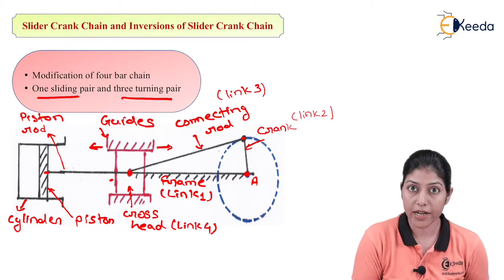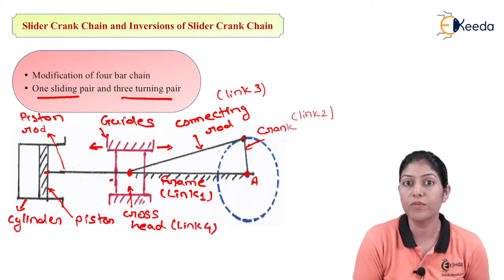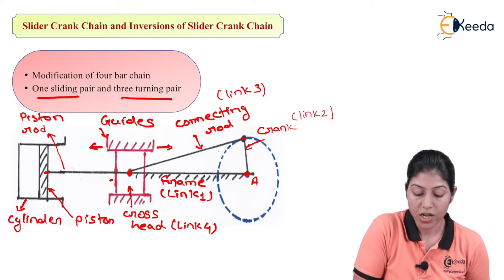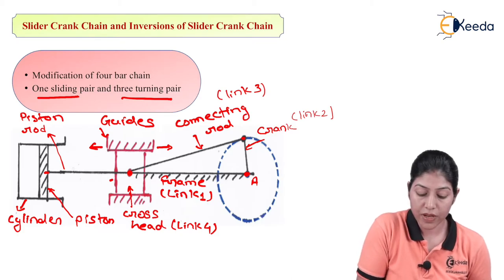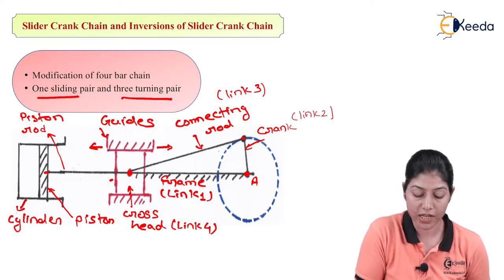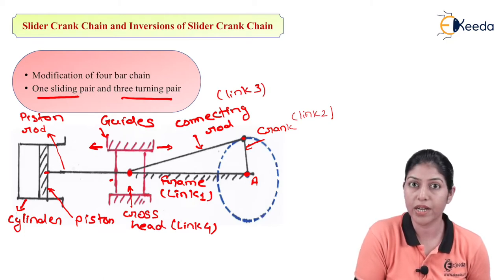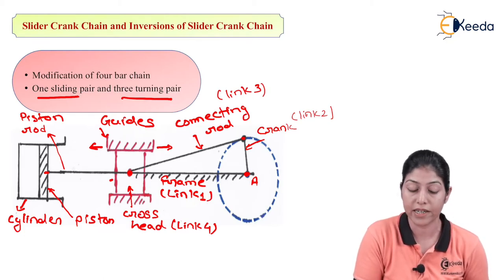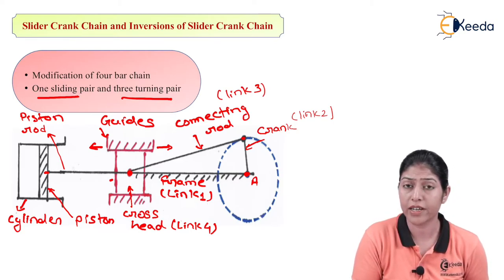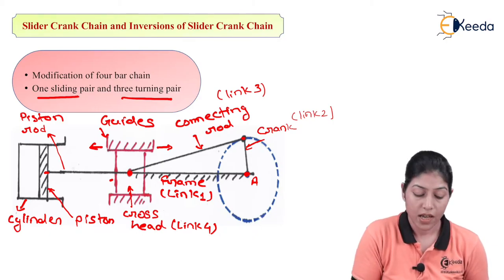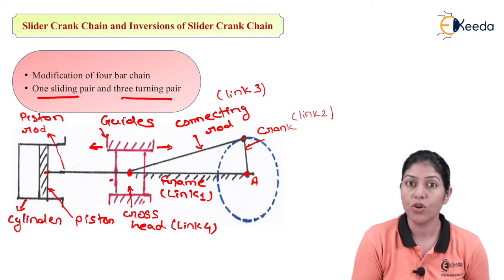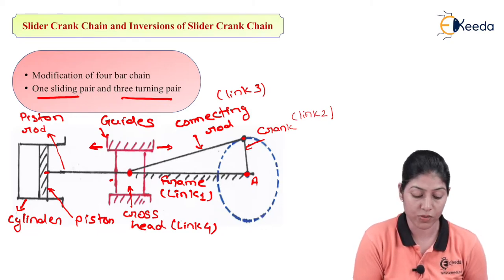The main work of the slider crank mechanism is to convert rotary motion into reciprocating motion. When this crank rotates and completes one revolution, the rotary motion of the crank is converted into reciprocating motion of the piston moving inside the cylinder. We can also convert reciprocating motion into rotary motion — so vice versa motion is possible in slider crank chain mechanism.